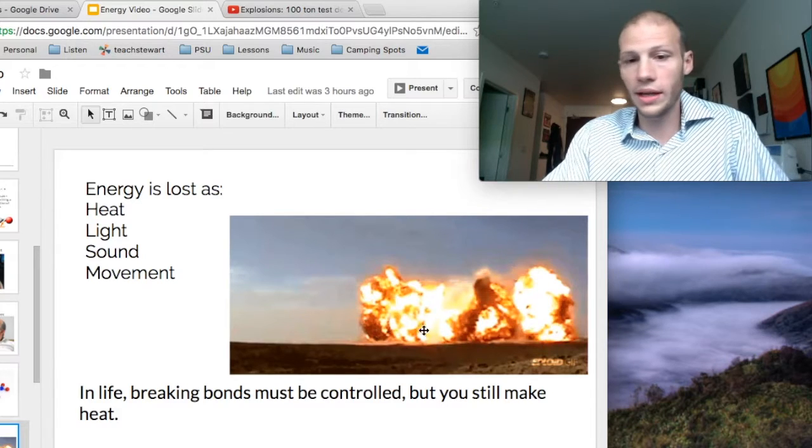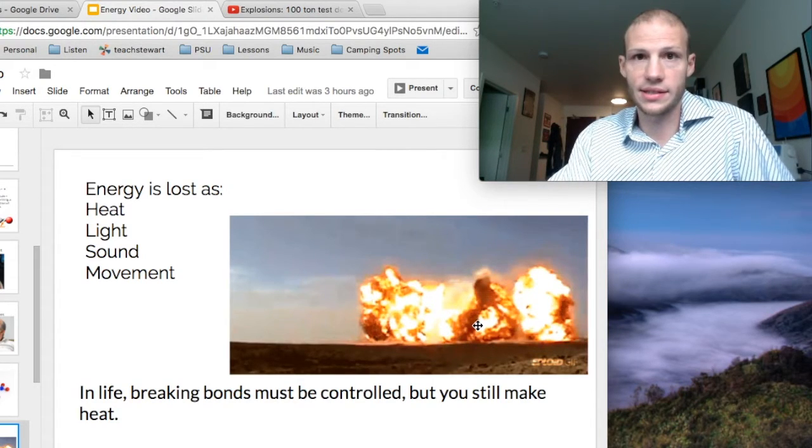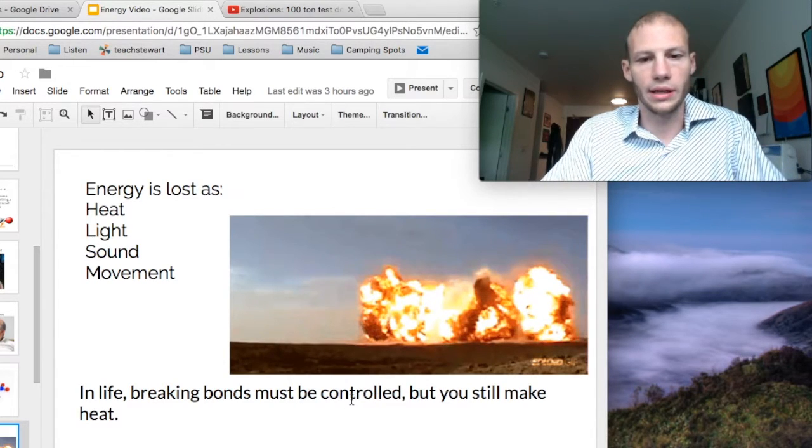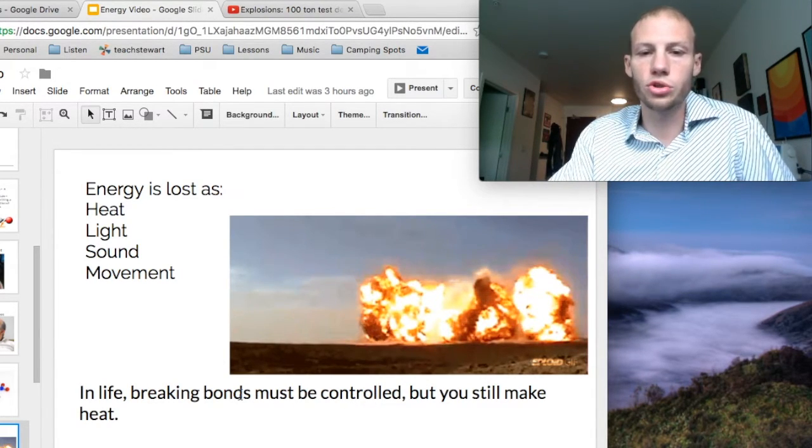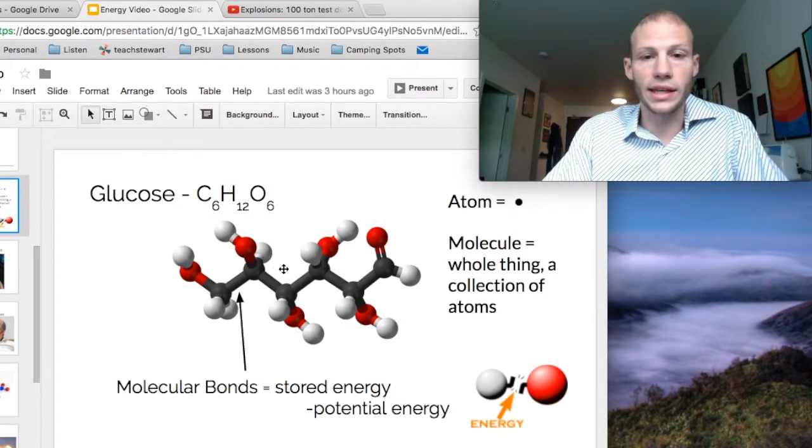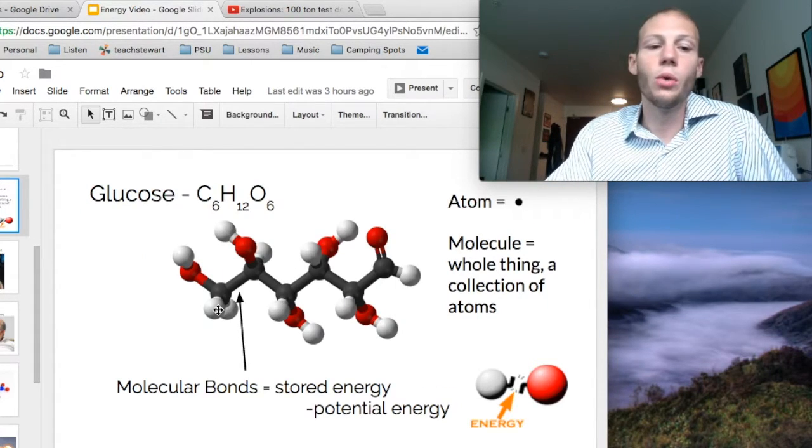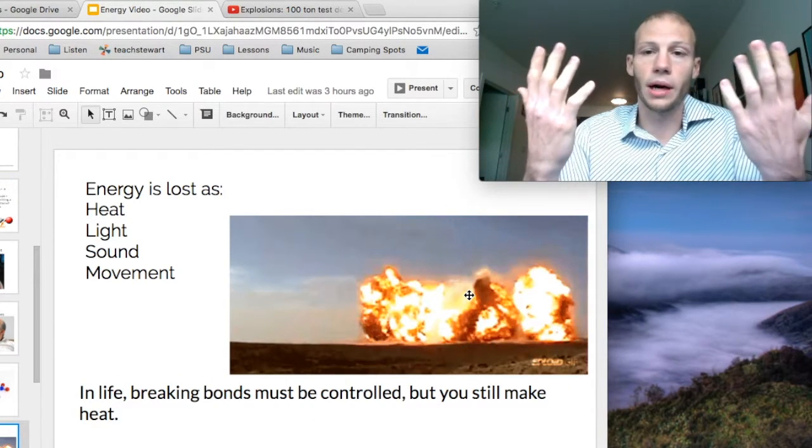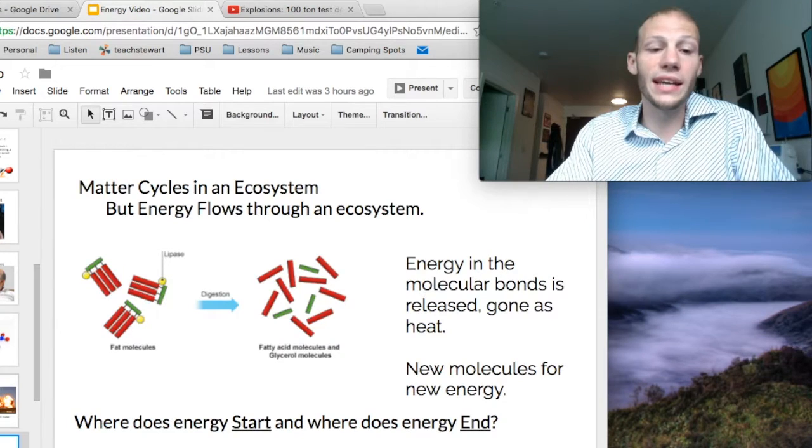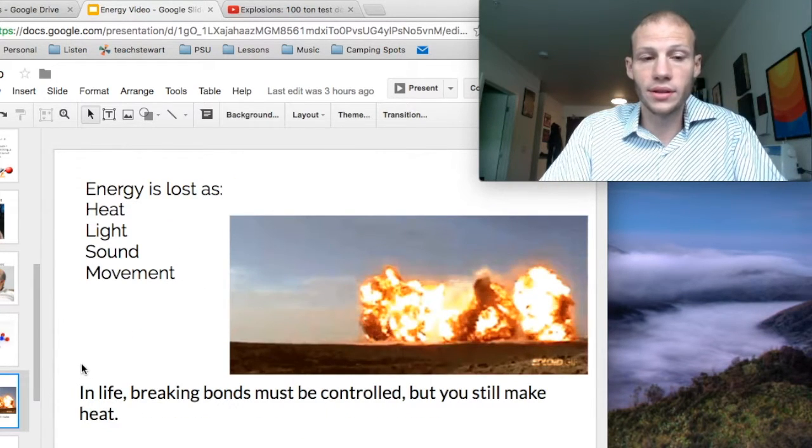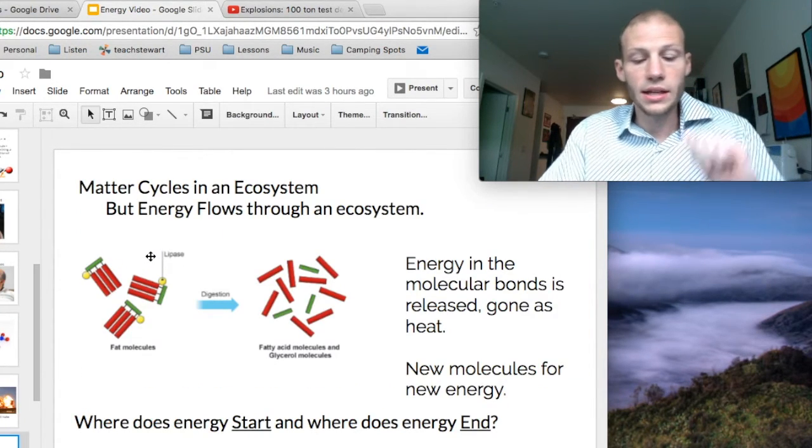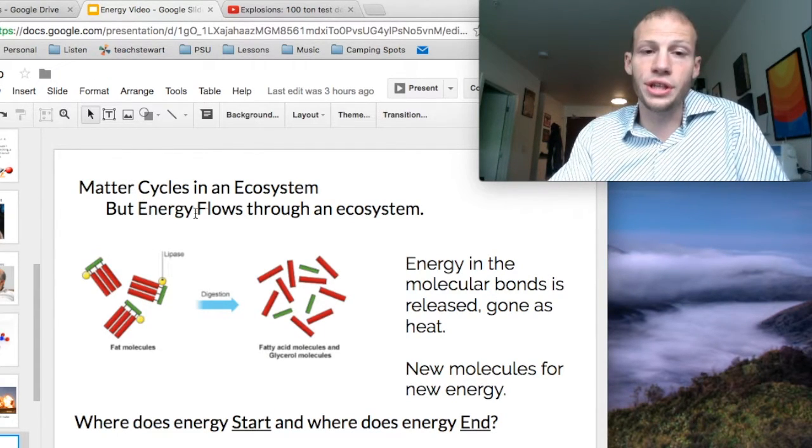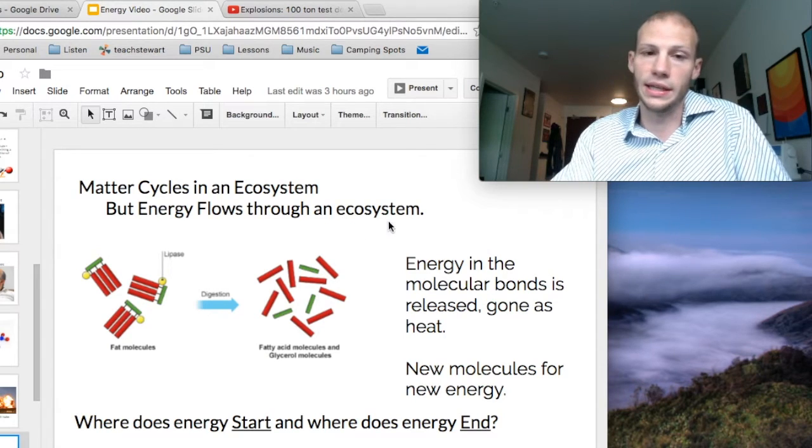In life, we don't want to have a huge explosion like this. We want to be much more controlled when we're breaking bonds. We have a much more controlled reaction of breaking this glucose molecule. We break that down. But at the same time, you still make lots of heat. That's why our bodies are warm. That's where we get our energy for living. So, it's important to remember, matter cycles through an ecosystem, and energy flows through an ecosystem.